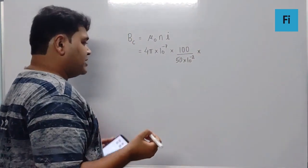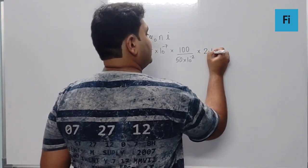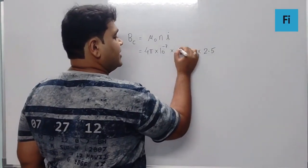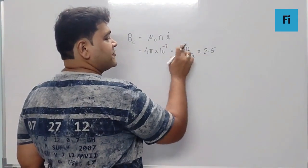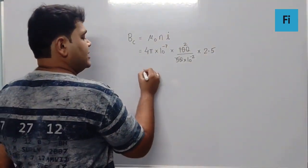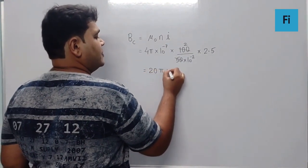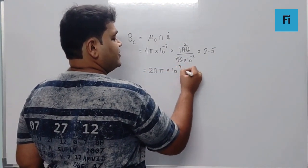And the current is given as 2.5. So 2 into 2.5 is 5, 5 fours are 20, so this becomes 20π × 10⁻⁷. This comes up, becomes 10 raise to plus 2.